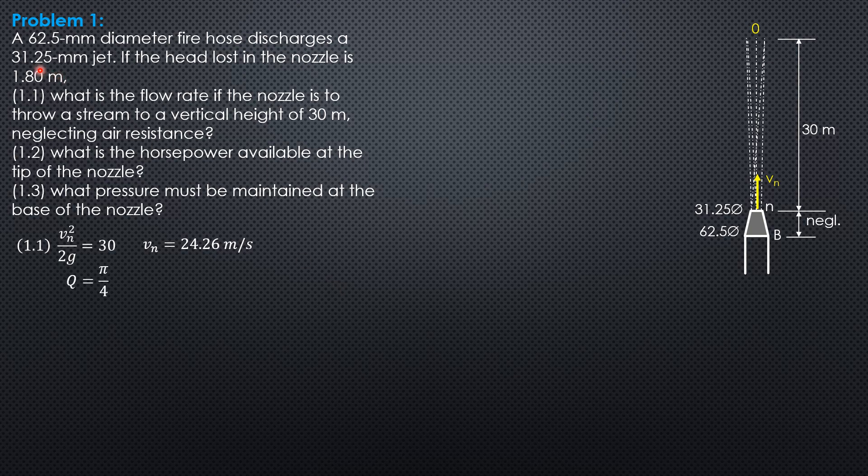Then, the discharge: pi over 4 times 0.03125 squared times mean velocity 24.26 times 1,000 to convert it to liters per second. The discharge is 18.61 liters per second for the flow rate.